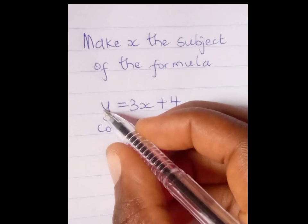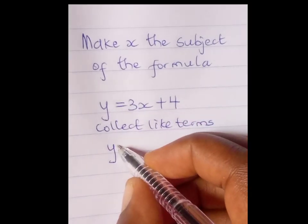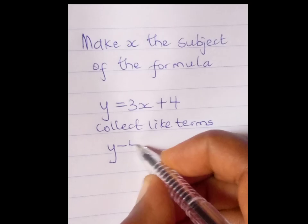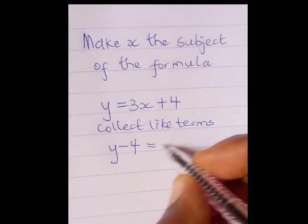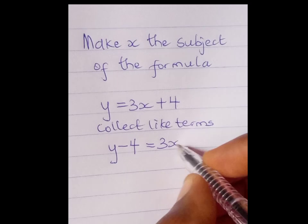By the time it crosses to the other side here, it turns to the negative. That is, y minus 4 equals 3x.